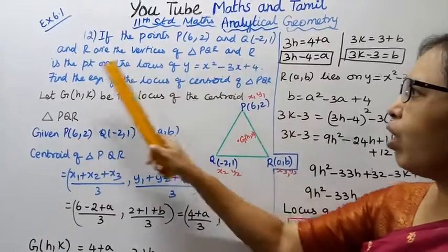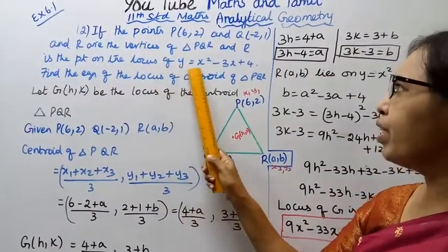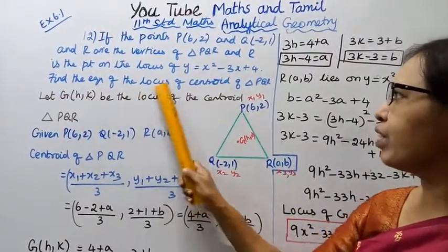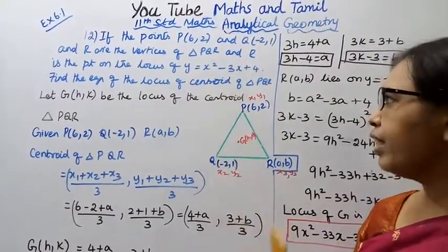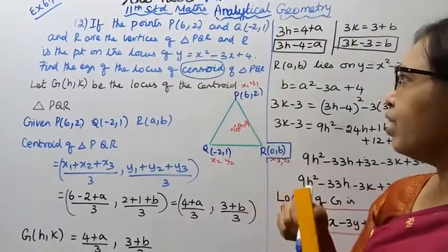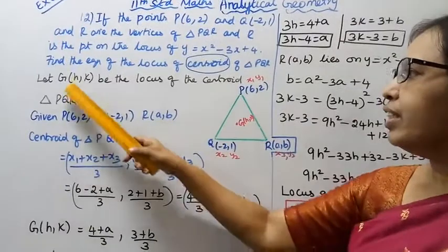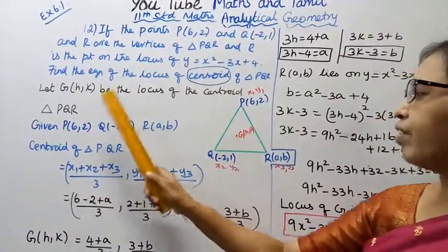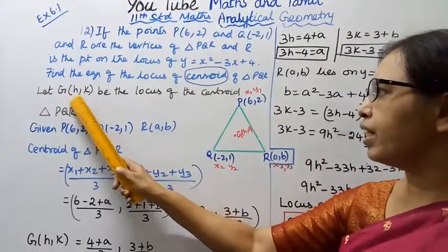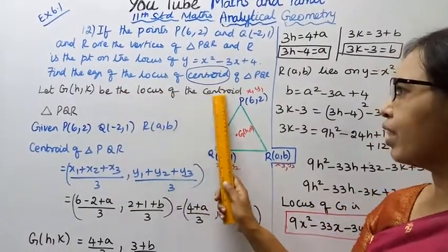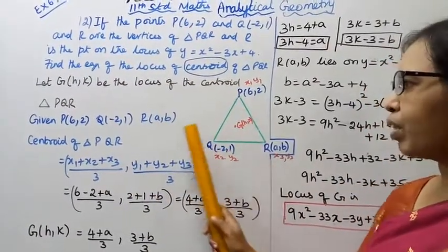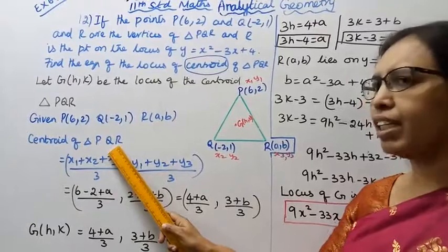and R is the point on the locus of y equals x squared minus 3x plus 4, find the equation of the locus of the centroid of triangle PQR.